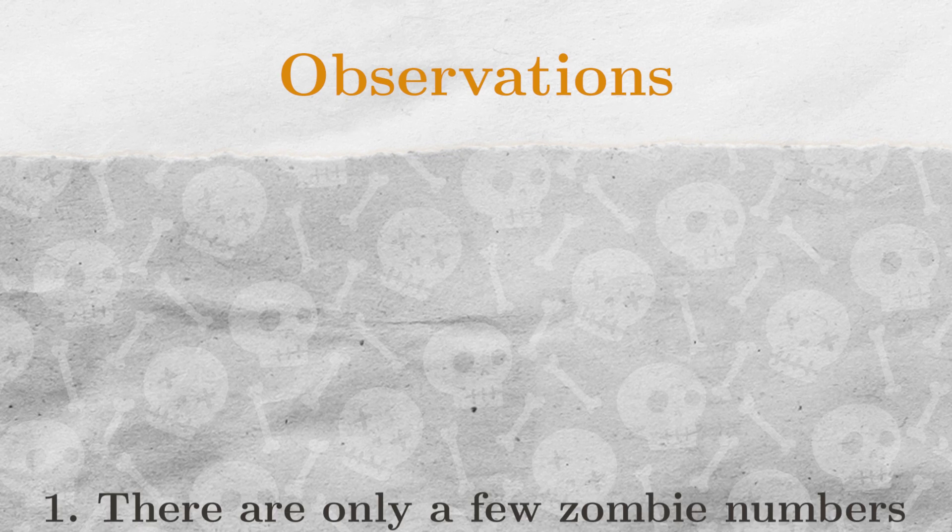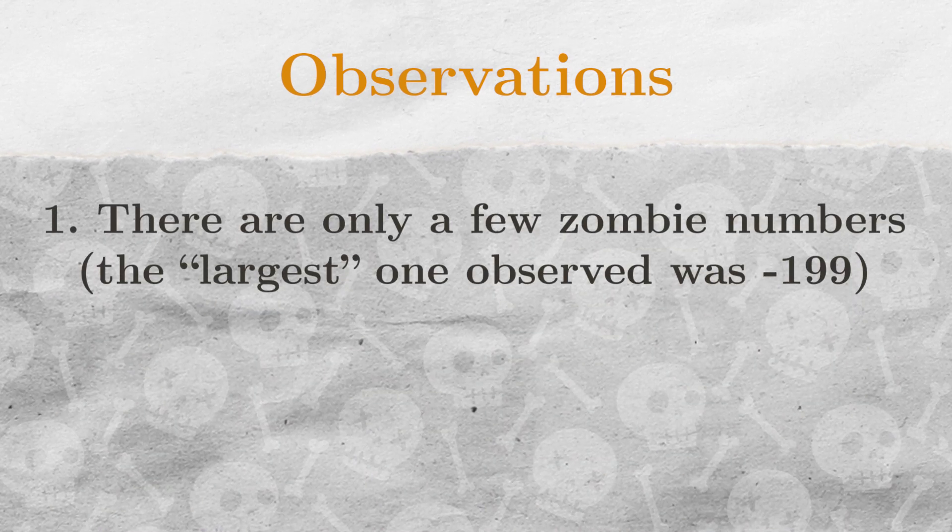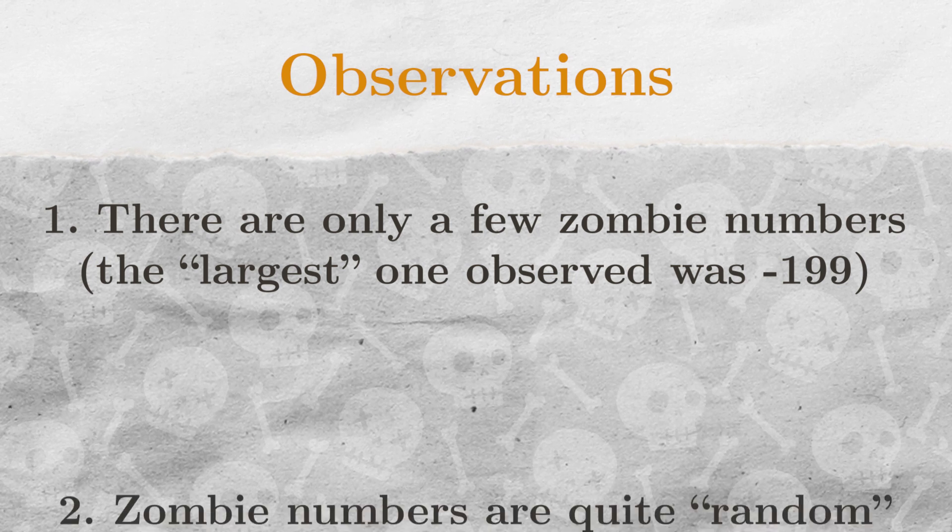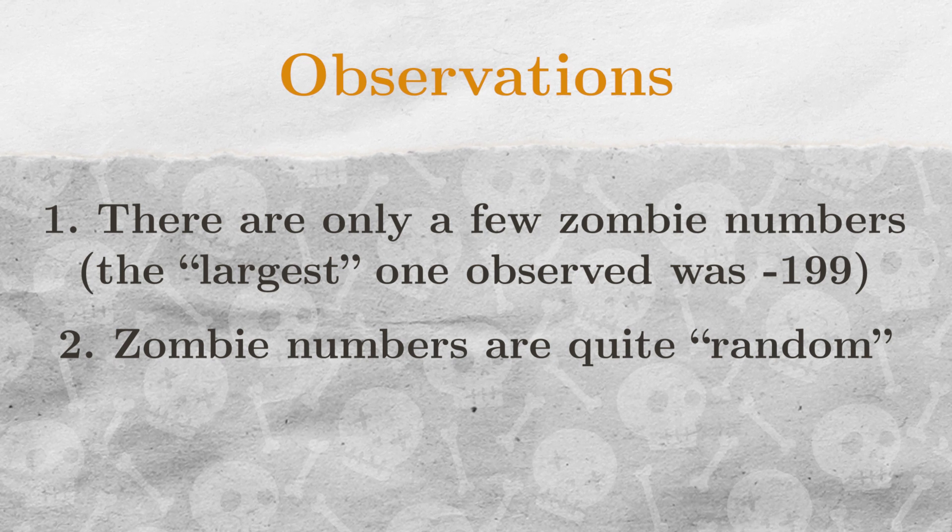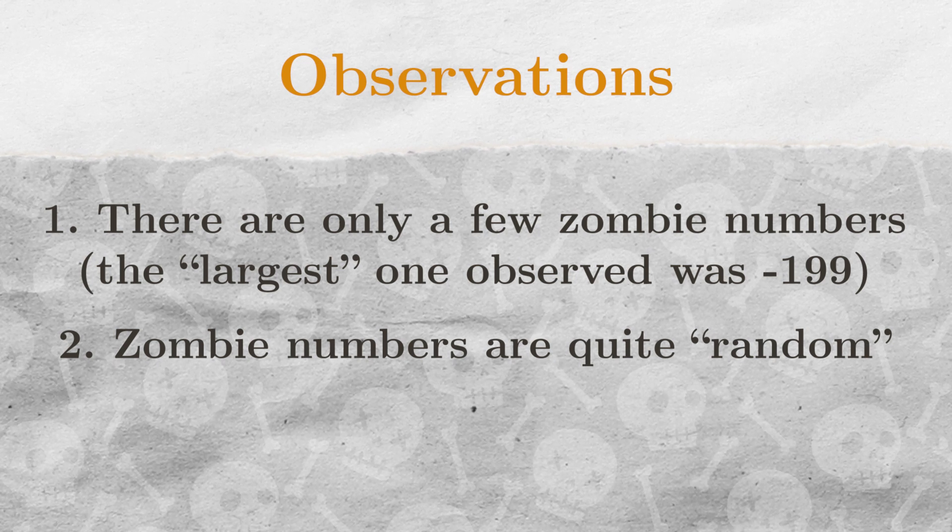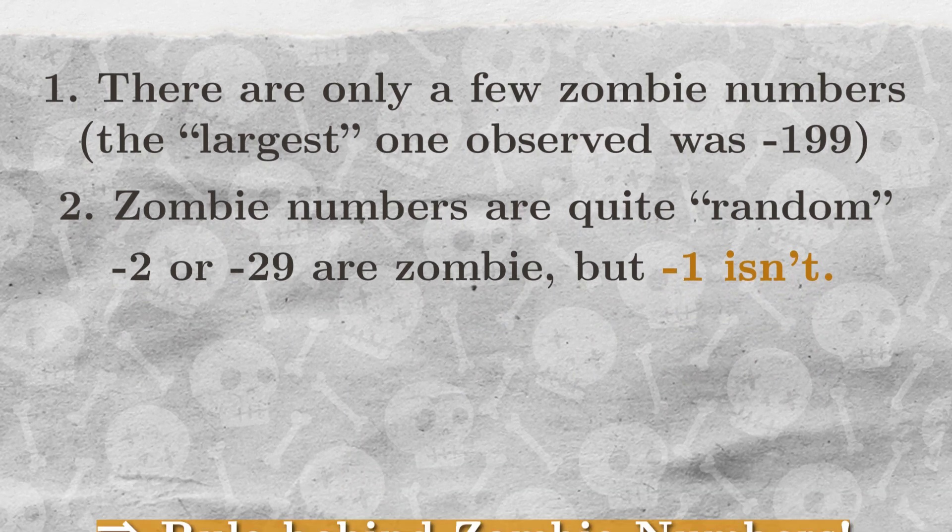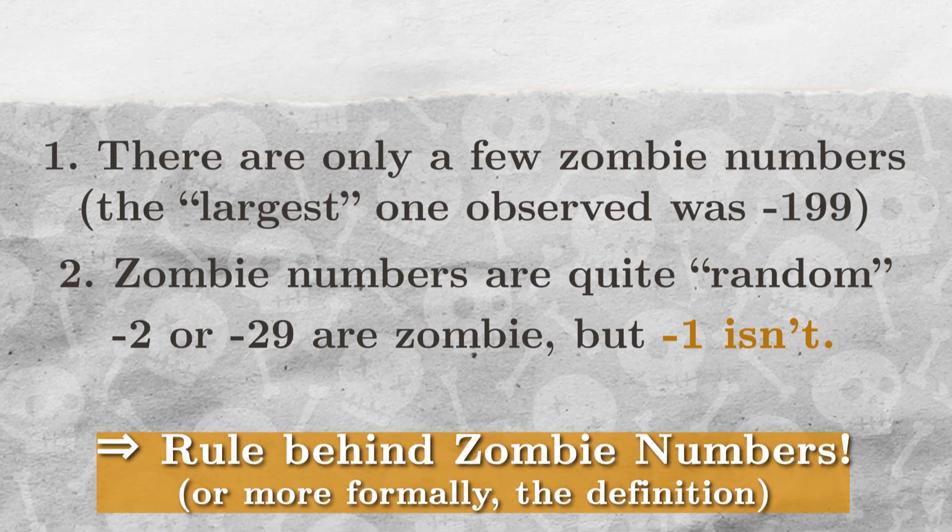First of all, apparently there are only a few zombies, which was kinda strange since there are infinitely many negative numbers. Second of all, only some special numbers like minus 2 or minus 29 were turned into zombies, but for example minus 1 wasn't. This led me to finding a rule behind which numbers turn into zombies and it goes like this.